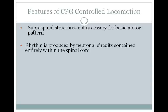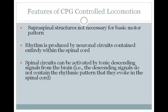A few features of CPG-controlled locomotion are well known. It's known that supraspinal or brain structures are not necessary for the basic motor pattern. The rhythm is produced by neuronal circuits that are contained entirely within the spinal cord — specifically in the lumbar and thoracic portion. These spinal circuits can be activated by tonic descending signals from the brain; the start of locomotion can be signaled by the brain, but those descending signals don't contain the rhythmic pattern that they evoke in the spinal cord.